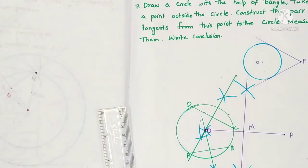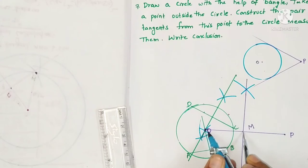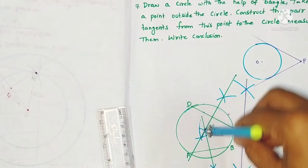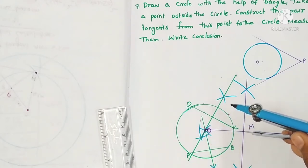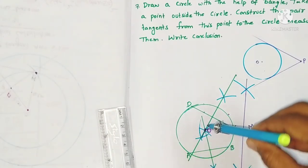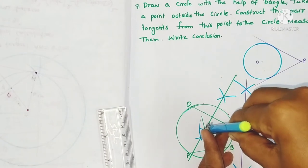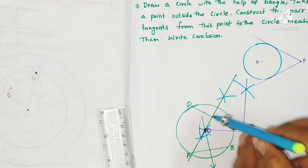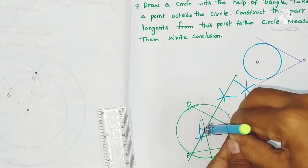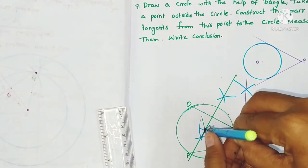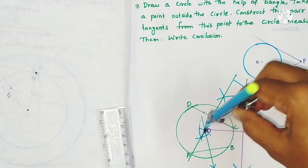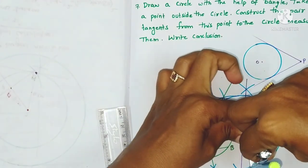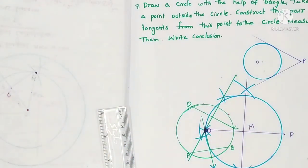Now by taking M as center, with OM or MP as radius — both are equal — draw a circle. This circle intersects the first circle at two points.